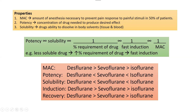Regarding induction and recovery, solubility and potency are inversely proportional to fast induction. If solubility is high, induction will be slow; if solubility is low, induction will be fast. MAC is also inversely proportional to potency and solubility. So if a drug is less soluble, there will be an increased percentage requirement but fast induction.